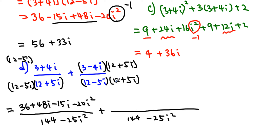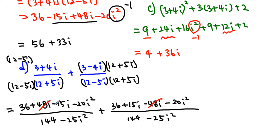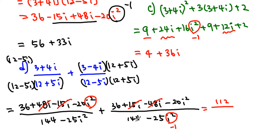For the second numerator: 3 times 12 is 36, 3 times 5i is plus 15i, negative 4i times 12 is minus 48i, and we get negative 20i². Since the denominators are the same, the positive and negative 48i terms cancel, and the 15i and negative 15i cancel. On top we have 36 plus 36, and the i² terms give plus 20 plus 20, totaling 112. The denominator: i² becomes negative 1, so 144 plus 25 equals 169. The final answer is 112 over 169.